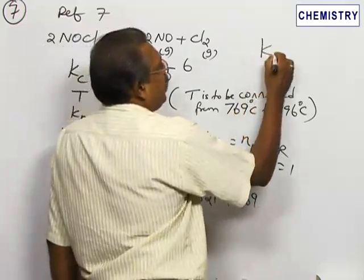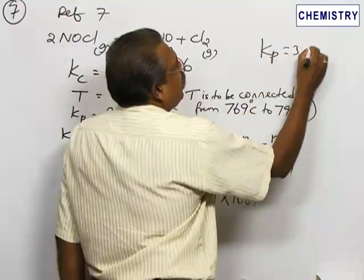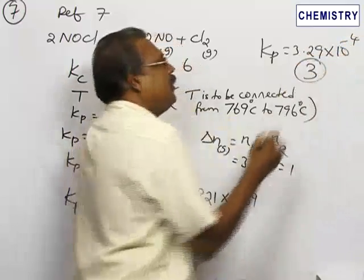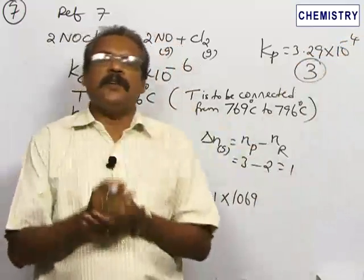So KP = 3.29 × 10⁻⁴. That is given by option 3. Select option 3 for this problem.